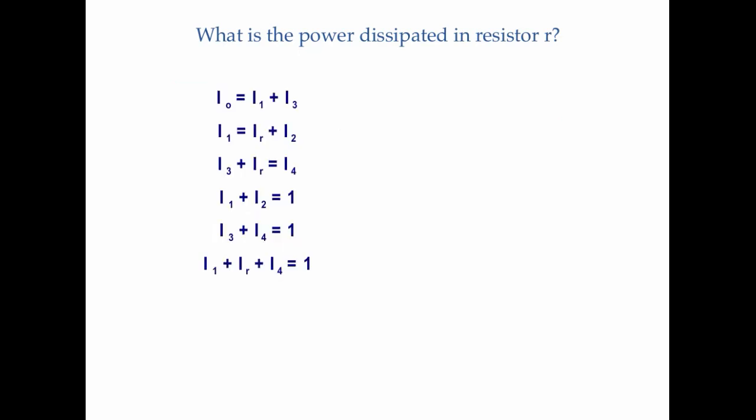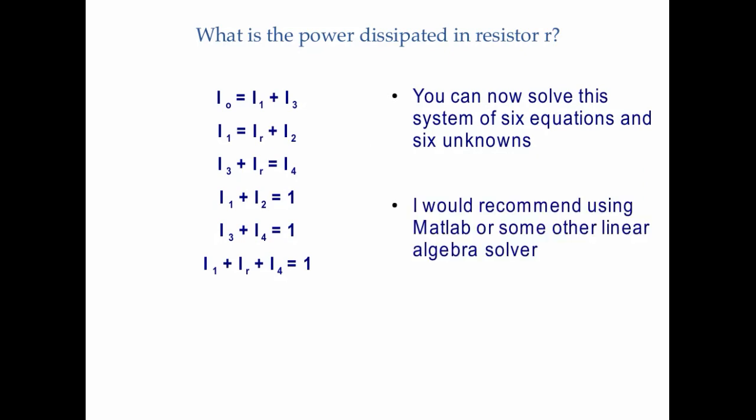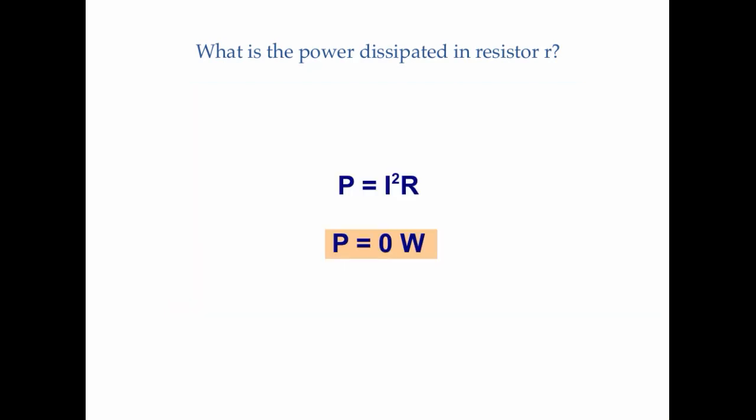Those are all six equations determined so far. With six equations and six unknowns, you can use whatever method you want to solve this system — I recommend using MATLAB or some other linear algebra solver. In this case, I used Octave, which is essentially an open-source version of MATLAB. I plugged in my coefficient matrix and my answers and calculated my currents. At the very bottom, IR equals zero amps — there is no current going through the center resistor. So the power dissipated, I²·R, equals zero.